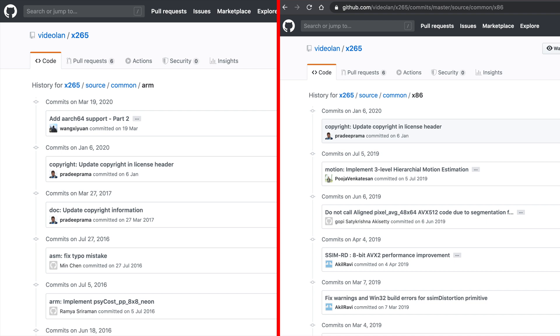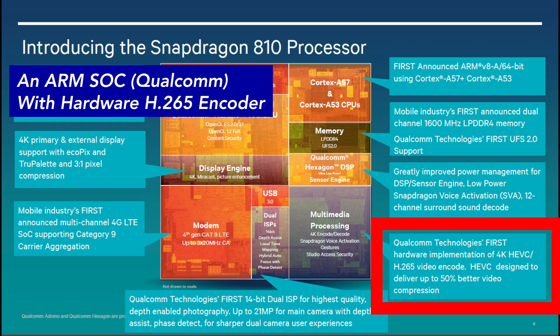It is safe to assume that H.265 software encoding performance on ARM devices like phones and tablets will not improve anytime soon. It might be possible to use the hardware encoders found in these devices to accelerate H.265 encoding massively. However, hardware encoders generally perform worse than software encoders in terms of quality and do not offer the rich selection of parameters available with software encoders. For instance, I don't know of any H.265 hardware encoder that supports constant rate factor, which is my go-to encoding mode.